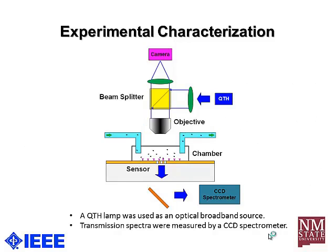Here is the schematic diagram of our experimental characterization setup. We use a QTH — quartz tungsten halogen lamp — as our optical source. Using this lamp along with a beam splitter and microscope objective, we focus the beam onto our sensor. We introduce blood samples into our chamber through macroscale tubing. When we introduce blood samples, we first lyse the red blood cells with DI water. Using a CCD-based spectrometer, we measure the transmission spectrum, and the overall process is monitored by a camera.